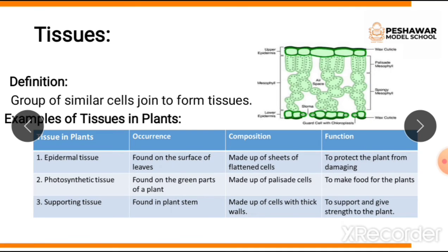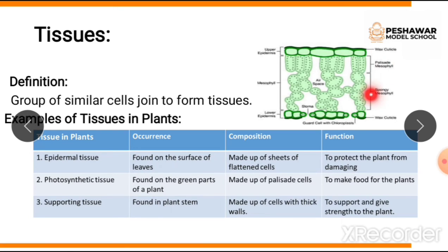Photosynthetic tissue comes from the word photosynthesis, so its function is to make food for the plant. It is found on the green parts of a plant. Photosynthetic tissue is divided into palisade mesophyll cells and spongy mesophyll cells. Their main function is to make food for the plant through photosynthesis.